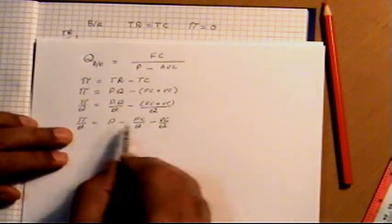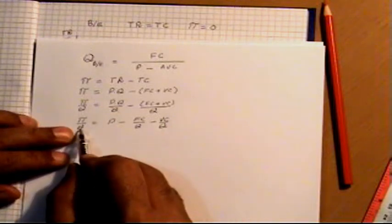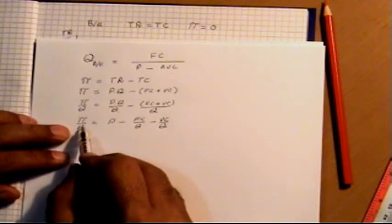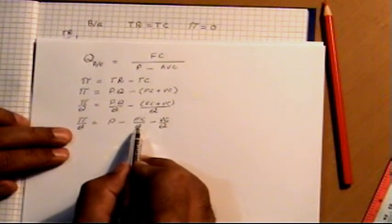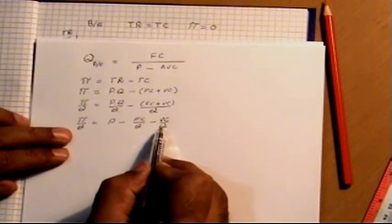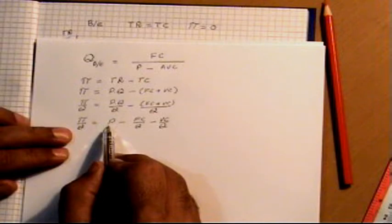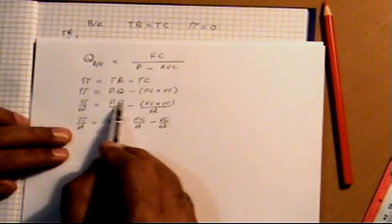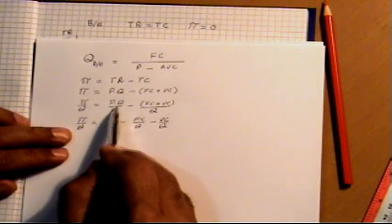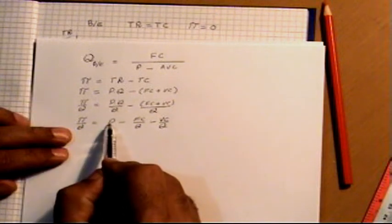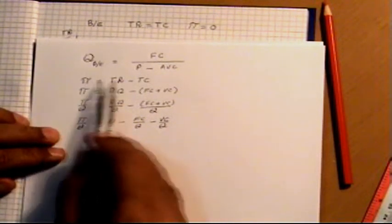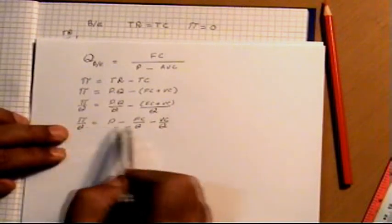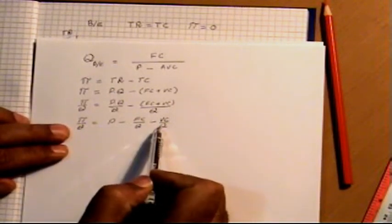Now we have three average functions: average profit, average fixed cost, and average variable cost. If you notice, this is pq divided by q - total revenue divided by q - so p is actually average revenue. From total function, we have converted into the average function.